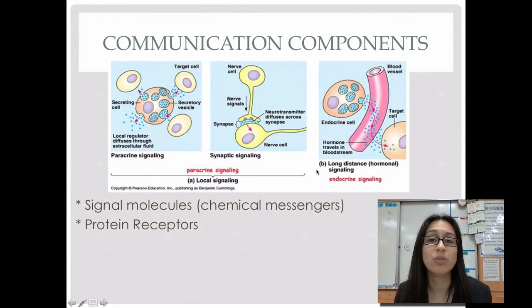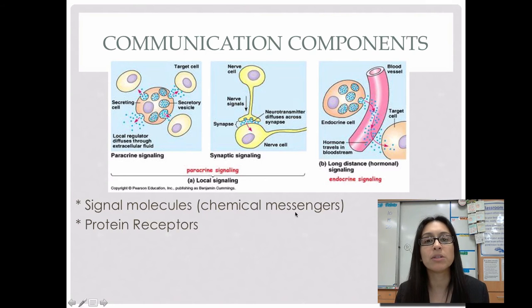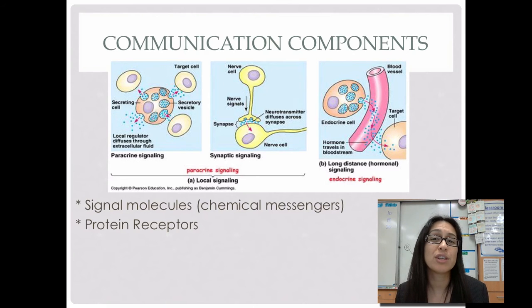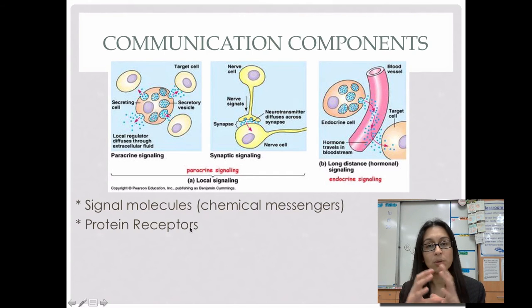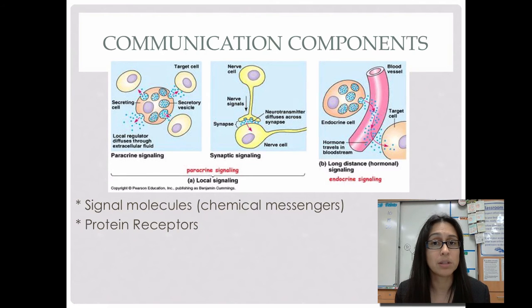Cells can't use phones or talk to each other, so their form of communication involves using molecules to send messages — these are called signal molecules or chemical messengers. Molecules are sent out from one cell and they're going to affect another cell. There are two main parts in communication: the signal molecules, which are the messages sent out, and protein receptors — proteins either part of the cell membrane or inside the cell — that receive the chemical message and change what a cell is doing.